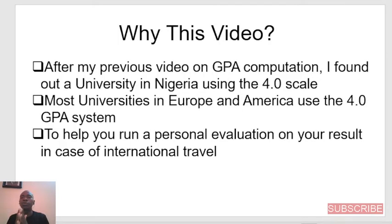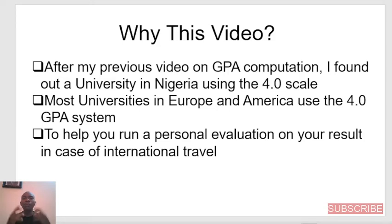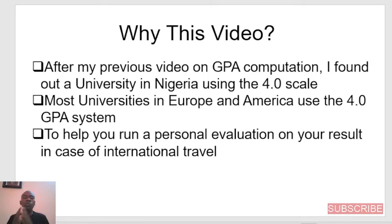Number one, after my previous video on GPA computation, I found out a Nigerian university that is making use of the 4.0 scale. And secondly, most universities in Europe and America are making use of the 4.0 GPA system. For many people who studied in Nigeria, or whose previous result was on the 5.0 scale, how can you really compute it using the 4.0 scale? This helps you run a personal evaluation on your result in case you need to travel or study at an international university. So that's why this is very, very essential.